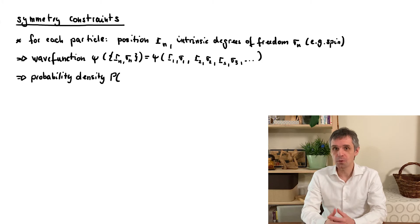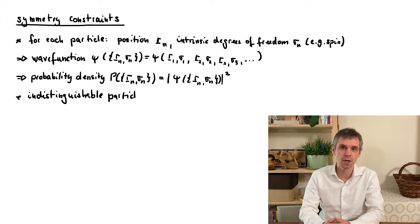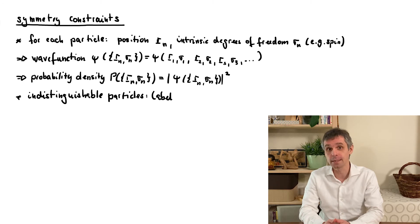...and the corresponding probability density is its absolute value squared. And we will focus on systems of such particles where they are all of the same type, which is to say that we do not have any means to distinguish them. So these will essentially be elementary particles of the same species, such as electrons...